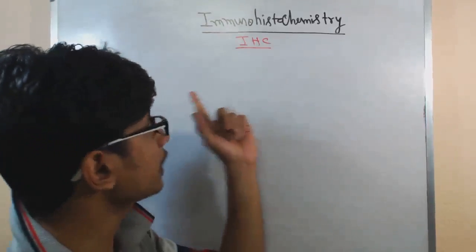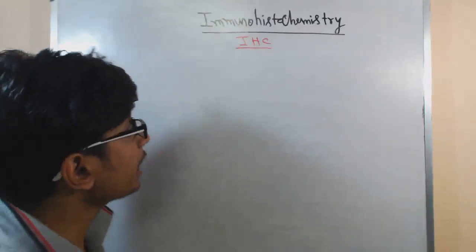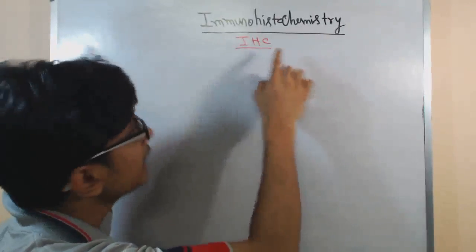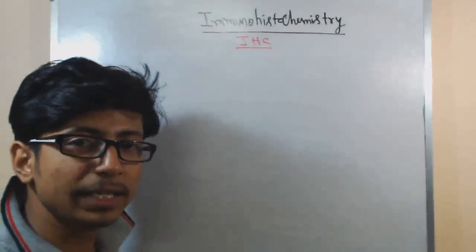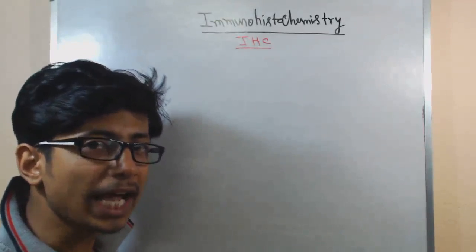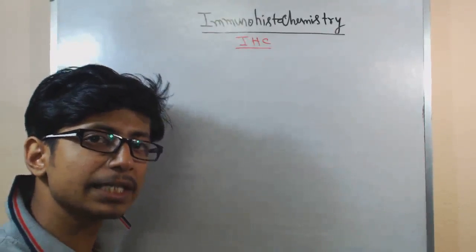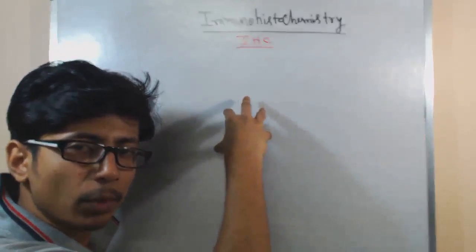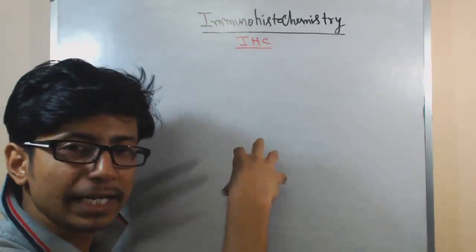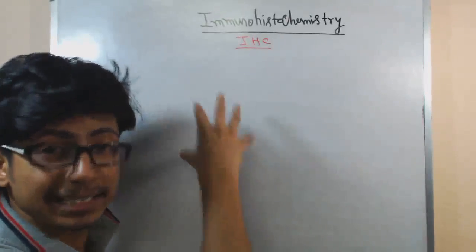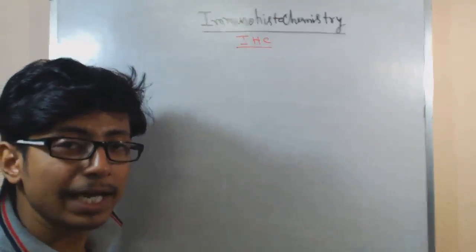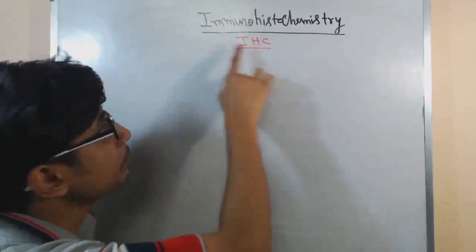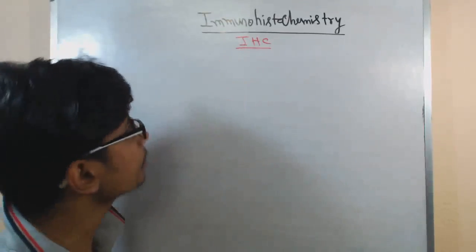Why is it called immunohistochemistry? 'Immuno' means it is related to the immunological reaction between antigen and antibody. The antigen is what we need to find, and we use antibody to find that antigen — so it is an immunological assay.